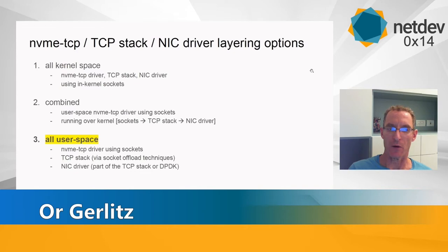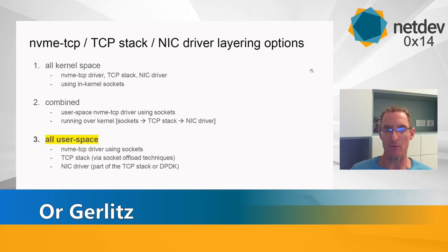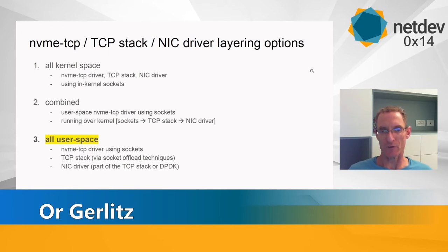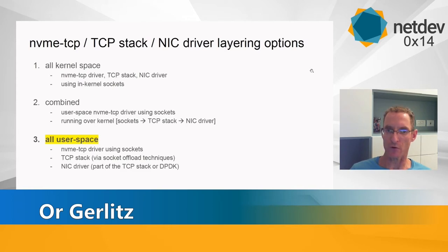I'd like to talk about the different layering options for NVMe over TCP. We have the NVMe TCP driver layered on top of the TCP stack and then the NIC driver — three general options. In the first, everything is in the kernel: the driver, TCP stack, and NIC driver. This is the more conventional setup for a storage stack, all in the kernel, using internal sockets, which are the kernel counterparts of user-space sockets.